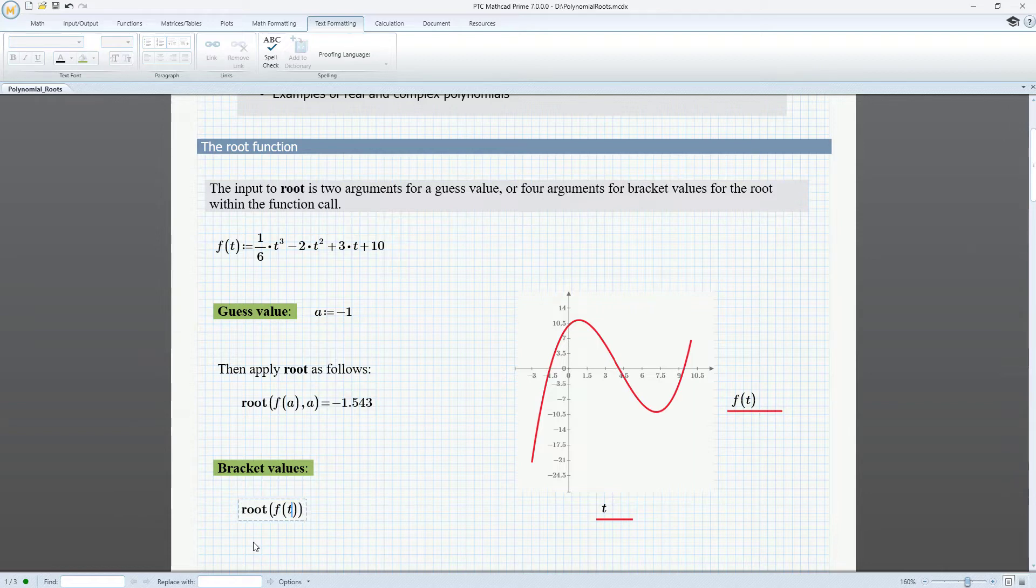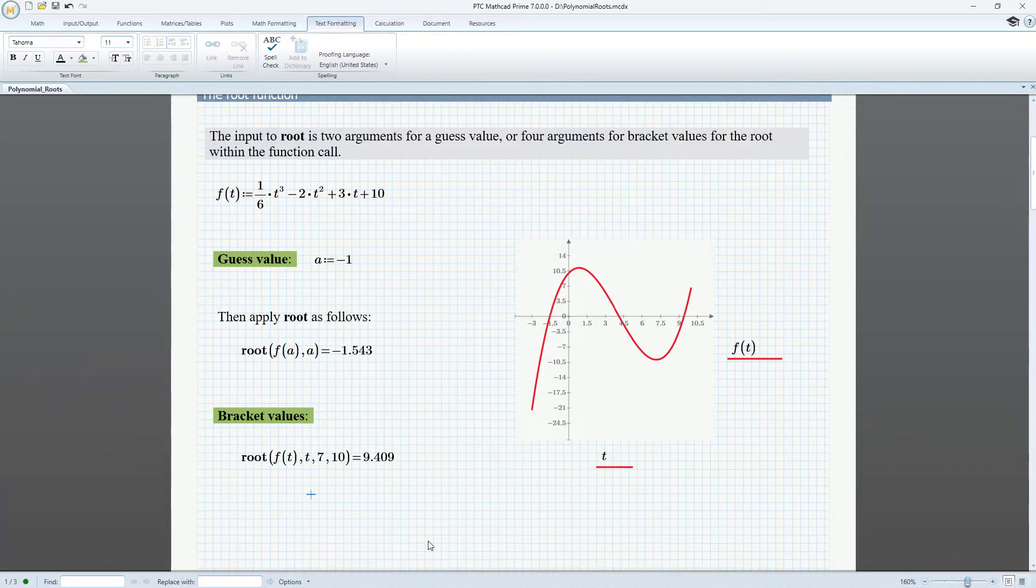To use the bracket values, we can enter the root function arguments in the following form. The root function finds that between 7 and 10, there's another root at 9.409.